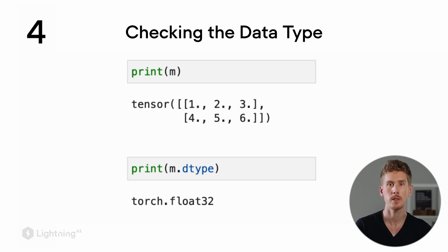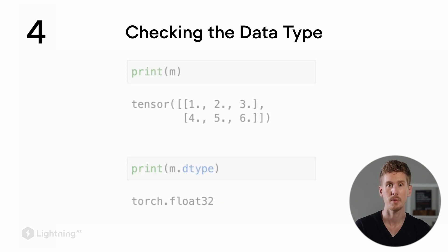When we call .dtype on our tensor, it returns torch.float32. The 32 refers to 32-bit precision, which is our preferred precision for deep learning due to efficiency reasons. Later on, we will also see 64-bit precision.